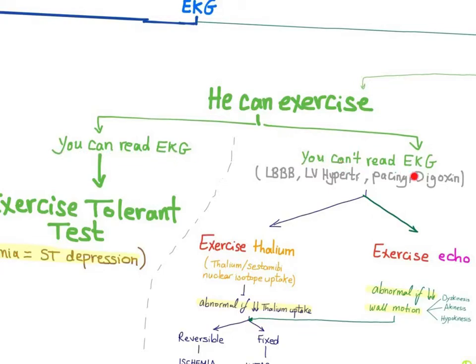You cannot read the EKG if the patient has left bundle branch block, left ventricular hypertrophy, pacemaker, or is taking digoxin. These are things that will cause EKG changes that mimic the actual ischemic event.